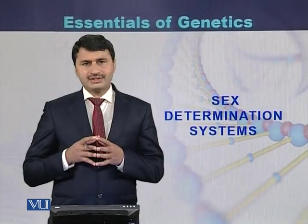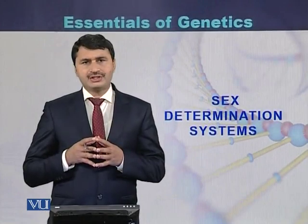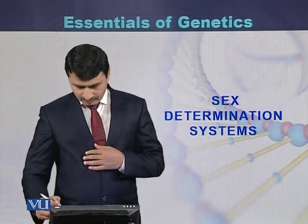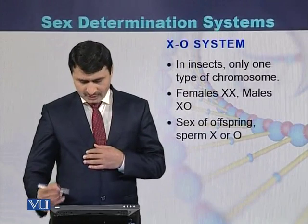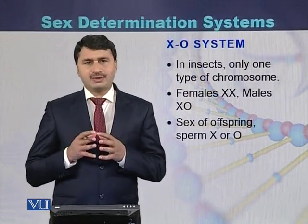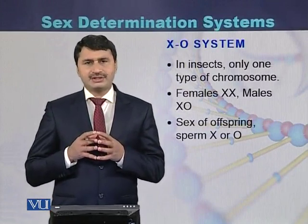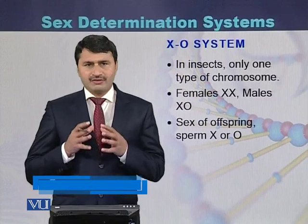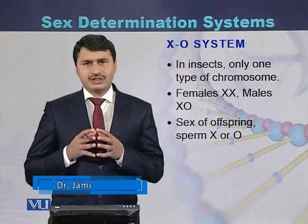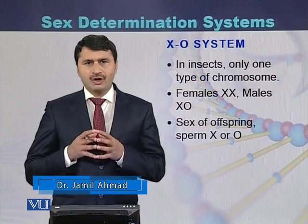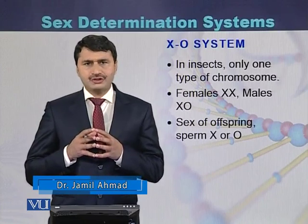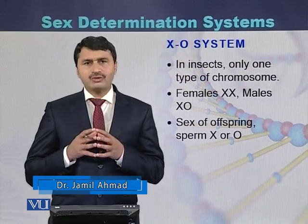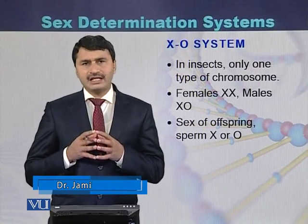Sex Determination Systems. There are different types of the sex determination system. The first system is called the X0 system, which is found in some of the insects.